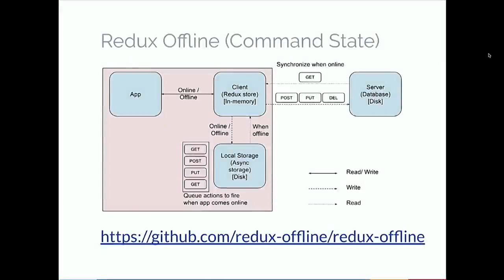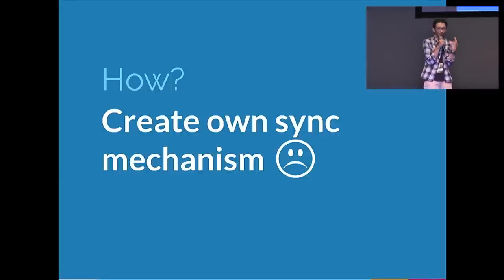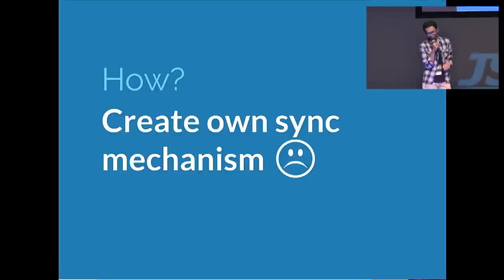For command state, there's another library. Basically, you write your requests to storage, and when you come back online it will execute your previous requests sequentially. I was using this kind of approach, but it's terrible. If I use document state sync and command state sync, I have to implement synchronization on the backend side — how to do conflict resolution with user data. It was all handled on the backend side, which is cumbersome and really not a good experience.